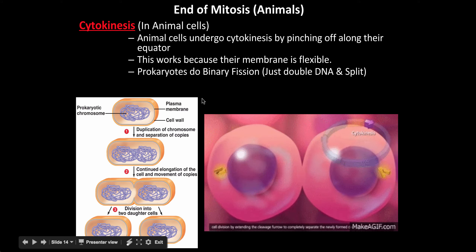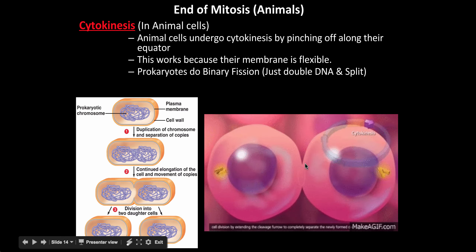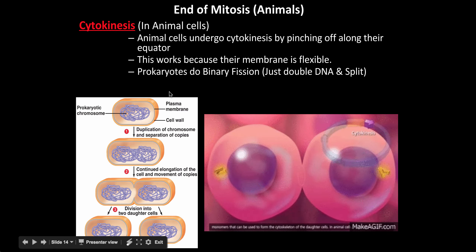At the end of mitosis in animal cells, cytokinesis occurs by pinching off at the equator. The cells become totally separated. This works because the cell membrane — the phospholipid bilayer — is flexible, so it can split and pinch off.